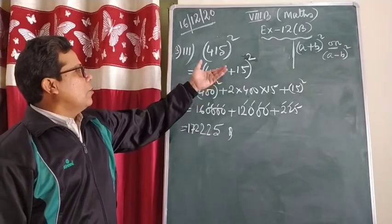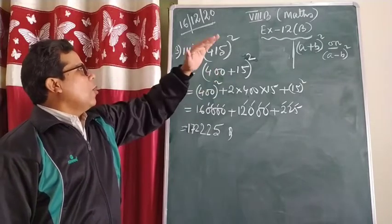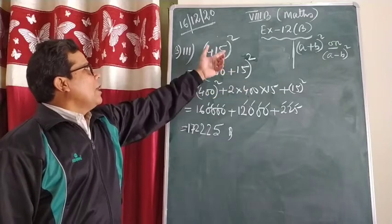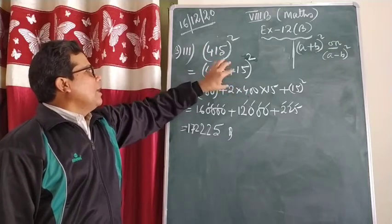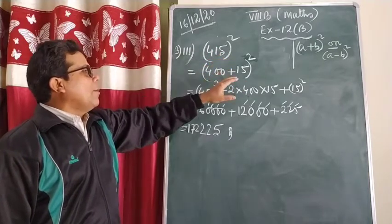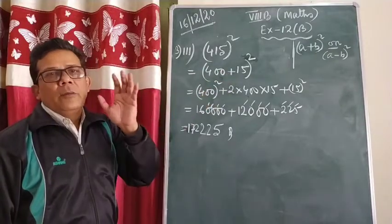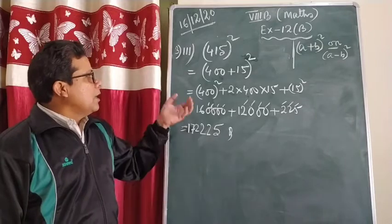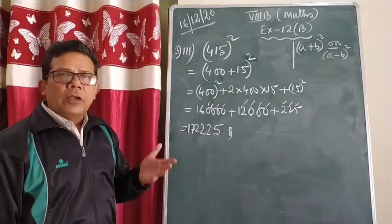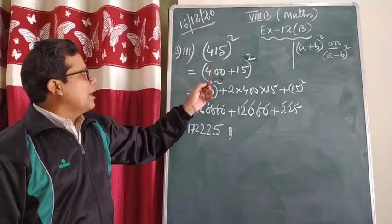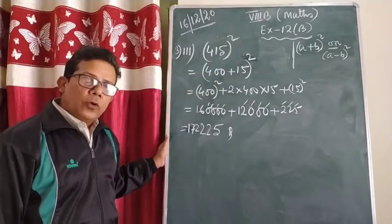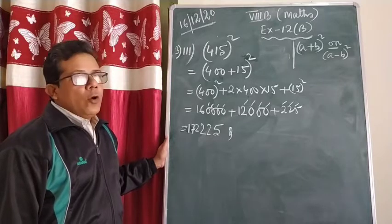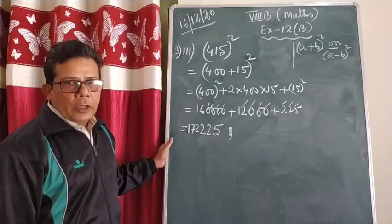You may ask me: sir, why are you not converting it into (a-b)? If I convert it into (a-b), then the first bigger number will come without a zero trailing, and the multiplication will be tough. Maybe it is a two-step question and will take a lot of time. So try your best to make the bigger number end with zero so that the calculation will be easy.